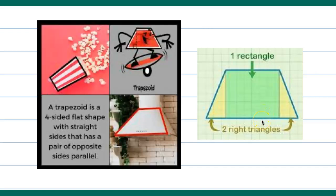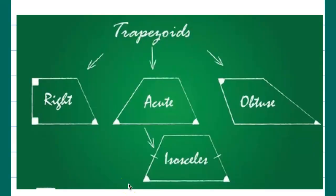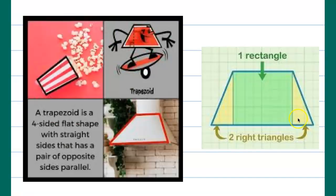I want to show you more shapes of a trapezoid that we could encounter in problems. Here are some: this is the right trapezoid, acute trapezoid, obtuse trapezoid, and isosceles trapezoid. We normally see isosceles trapezoid because these are equally shaped, like what we have here. This is what we usually call regular.